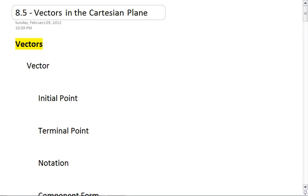Section 8.5, Vectors in the Cartesian Plane. We're going to be looking at vectors in the Cartesian plane, which means we're looking at vectors in two-dimensional space.